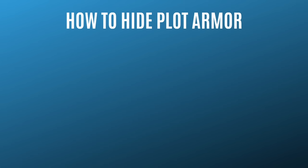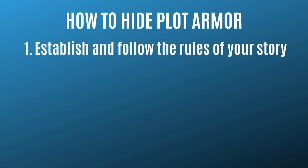Now let's talk about how to wear plot armor — how to hide it or downplay the fact that your characters have it. I'm going to give you five tips. The first one is to establish and follow the rules of your story. If you're telling a story that adheres to gritty realism, make sure your characters solve problems in a realistic way. On the other hand, if your story is more pulpy, you may be able to show wild and crazy escapes without losing your audience.